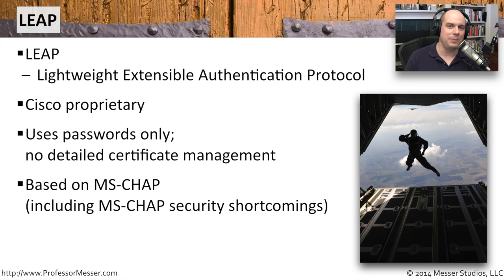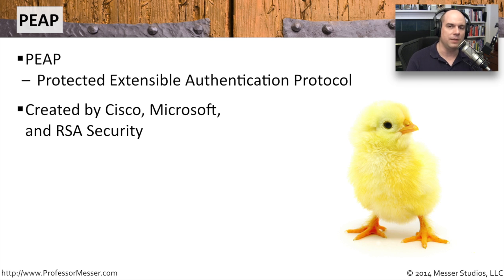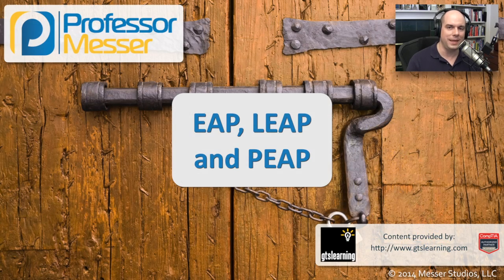Most people want more encryption on their wireless network, especially for authentication. That's why you'd typically implement PEAP, which stands for Protected Extensible Authentication Protocol. This was created by Cisco, Microsoft, and RSA Security to encrypt all of this communication as a standard that works across many different wireless devices. What PEAP essentially does is create a TLS tunnel — most people think of this as an SSL tunnel — which means you only need a certificate on the authentication server, and all authentication communication is encrypted within that tunnel.